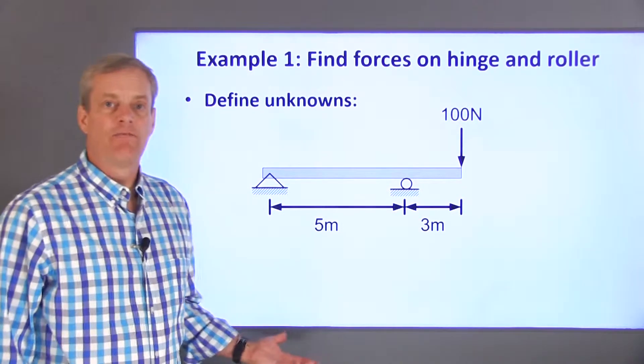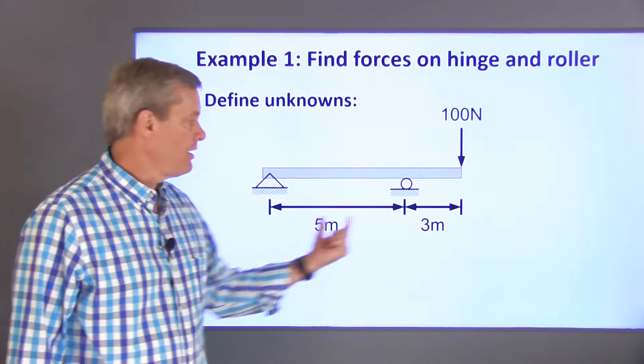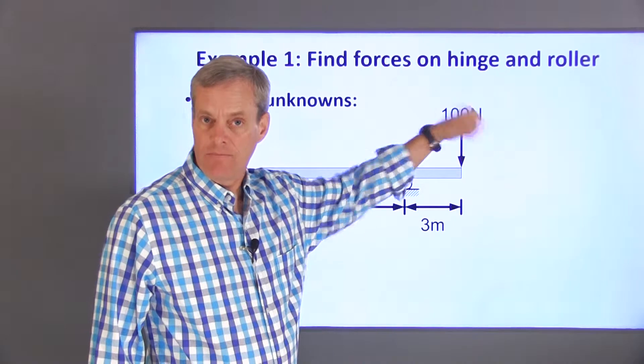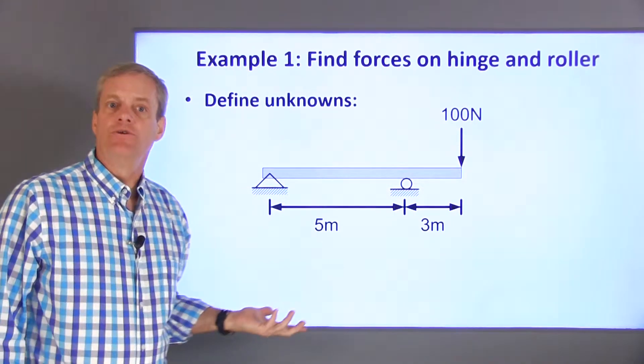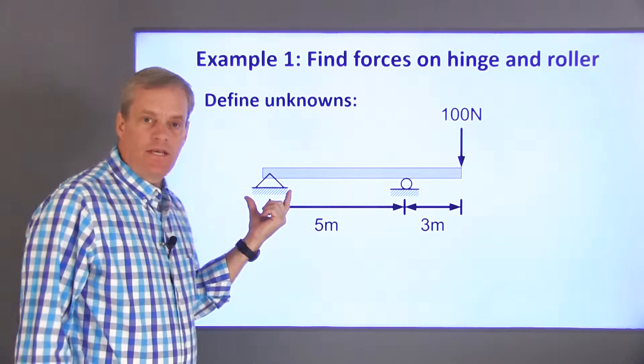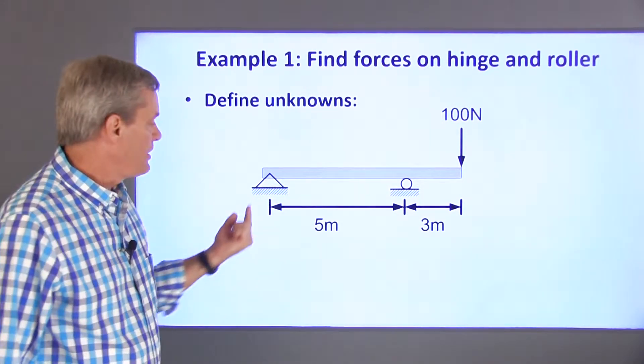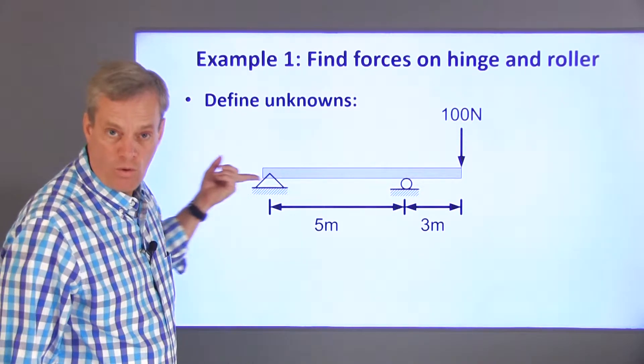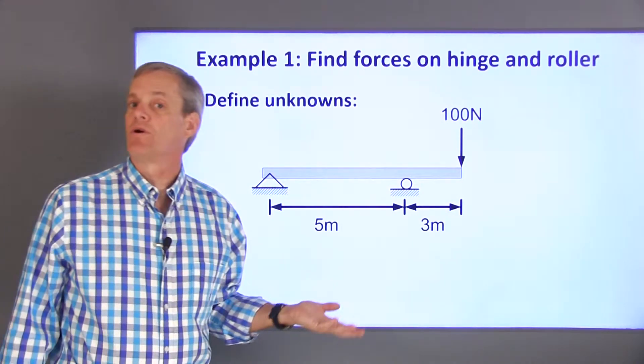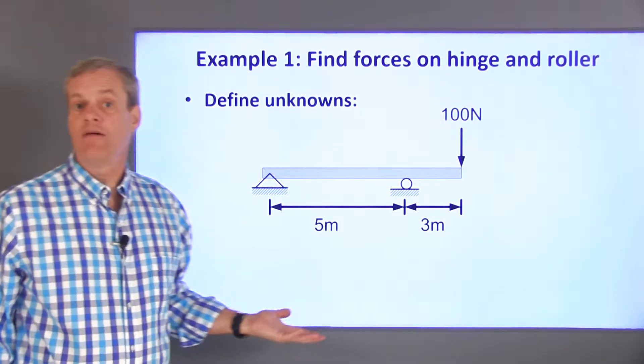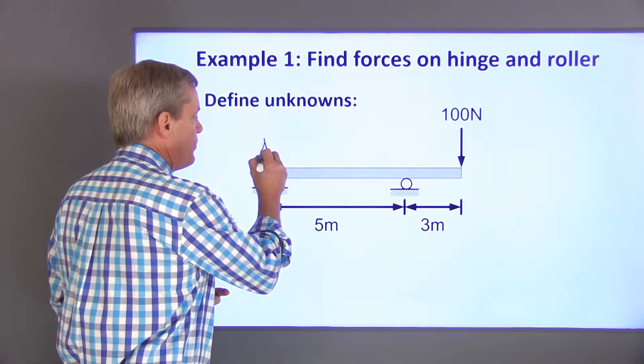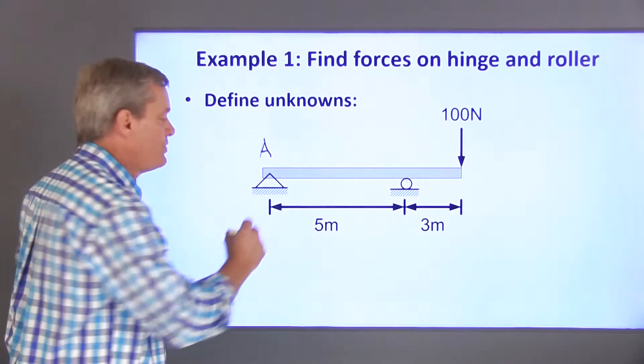Let's do an example to see how it works. In this example, I have a beam that's supported with a hinge on one end and a roller here. I'm applying a 100 newton force straight down at this end of the beam. The first thing I need to do is define the unknowns and write the equations governing the system. This hinge can support forces in two directions. It will keep this end from moving either vertically or horizontally, but it won't keep the end from rotating. It's like a hinge on a door. You can rotate the door, but you can't move the door up, down, or sideways.